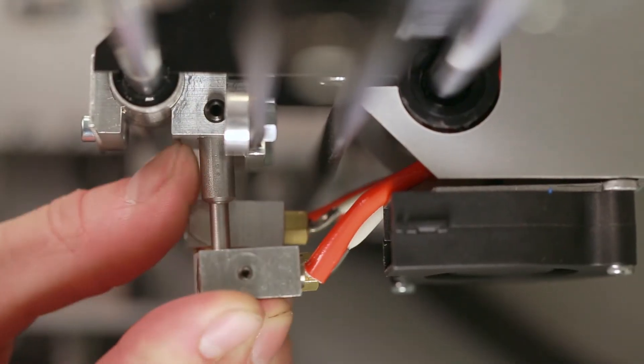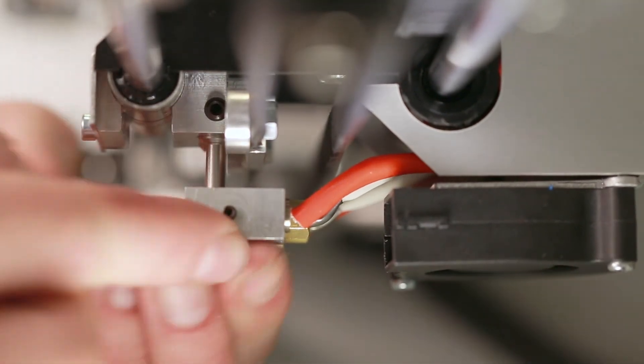Insert the hotend tube into the printhead and tighten the set screw with an allen wrench.